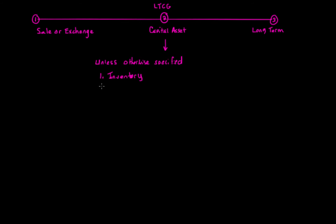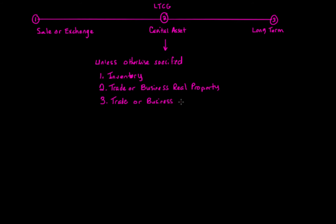The next item is trade or business real property. The third item is trade or business personal property that is subject to depreciation or amortization. Note that real property is any real property — it doesn't have to be subject to depreciation, so this includes items like land. The third item is trade or business personal property subject to depreciation or amortization.